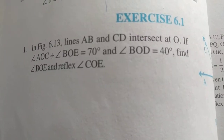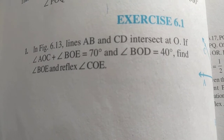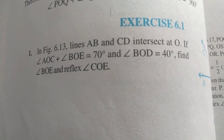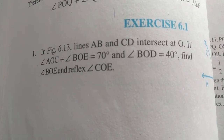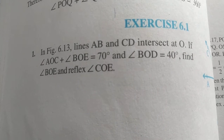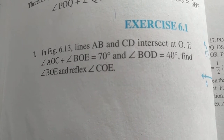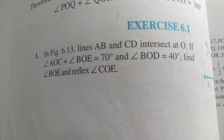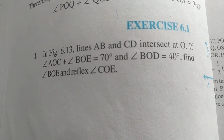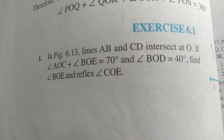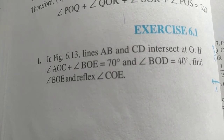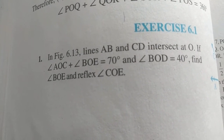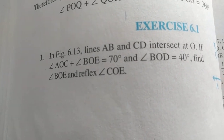Now coming to Exercise 6.1 — this is your first question. Here they have given that the sum of two angles is 70 degrees and one of the angles is 40 degrees. You have to find angle BOE and the reflex of angle COE. I will explain by showing the figure.